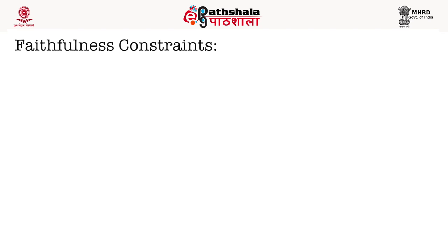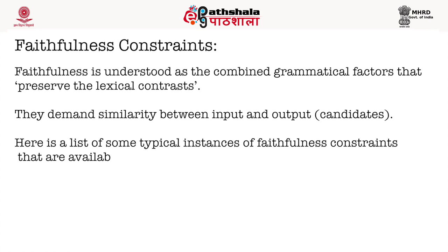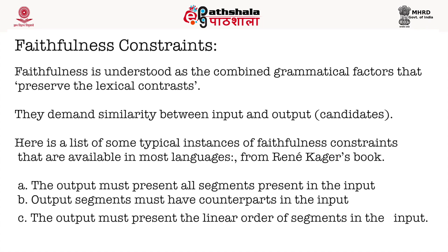Moving on to faithfulness constraints: faithfulness is understood as the combined grammatical factors that preserve lexical contrast. They demand similarity between input and output candidates. Typical examples of faithfulness constraints include: first, the output must present all segments present in the input — that is, there should not be any kind of deletion (MAX-IO); second, output segments must have counterparts in the input — that means there should not be any epenthesis (DEP-IO); and third, the output must preserve the linear order of segments in the input — that is, metathesis is not allowed (LINEARITY).